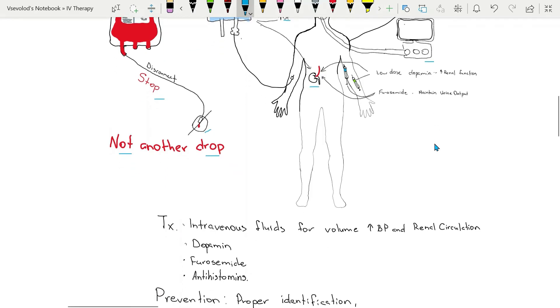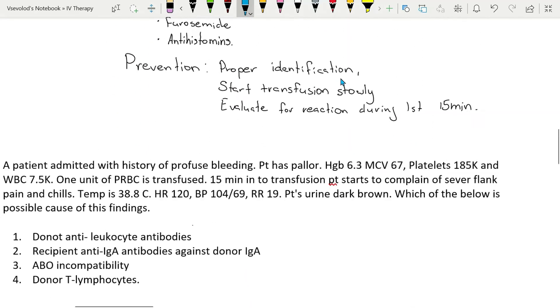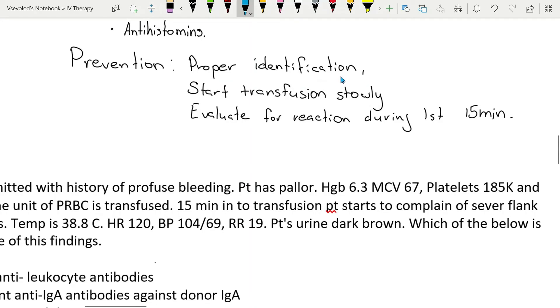Extreme care during the entire identification process is the first step in prevention. Clerical and human error involving proper patient identification, sampling and blood unit identification are the most common cause of acute hemolytic transfusion reaction. The transfusion must be started slowly and evaluation of the patient for reactions during the first 15 minutes is needed to monitor for initial signs and symptoms of acute hemolytic transfusion reaction.